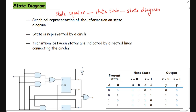Now, what is a state diagram? A state diagram is just another representation of the data available in the state table. It is a graphical representation and has two elements: a circle and a directed line. The circle represents the state of the given circuit, and the directed lines represent the transitions between states. If there is some input to the given state, the corresponding output is represented by directed lines connecting the circles.